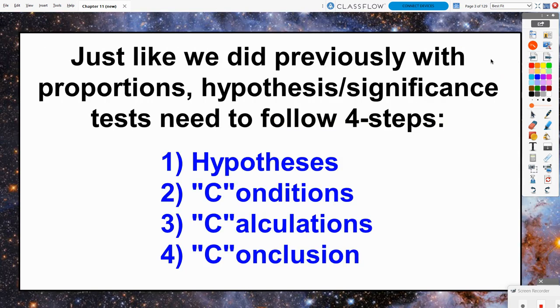In order to do our hypothesis or significance testing, we're going to follow the same four steps that we did two chapters ago when we did this for proportions. We're going to write out our hypotheses, check our conditions, perform our calculations, and finish with our conclusion statement.